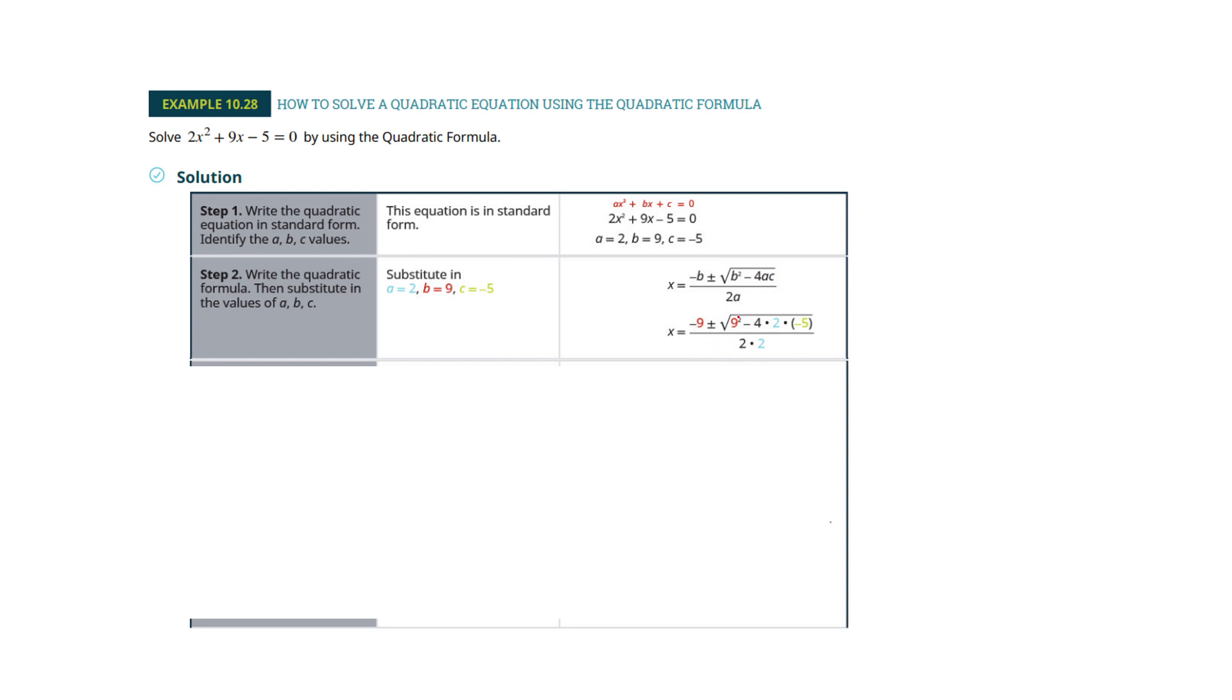Now, order of operations says we have to clean up under the root first. So just that would be where you'd run into trouble. And even under there, exponents are first. Be careful of the signs. There's a minus in there, so a minus and a minus are going to become positive. So if we clean all this up, we get down to here.